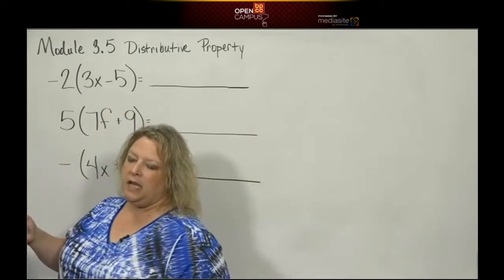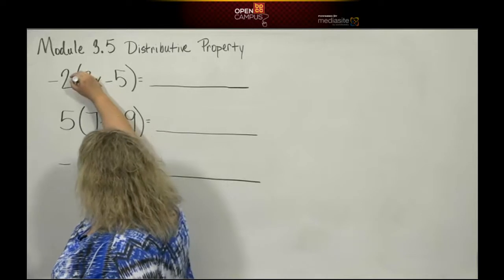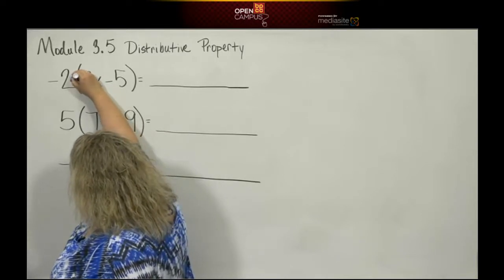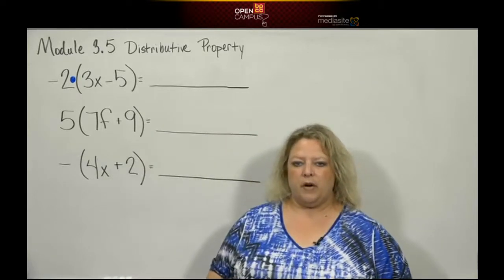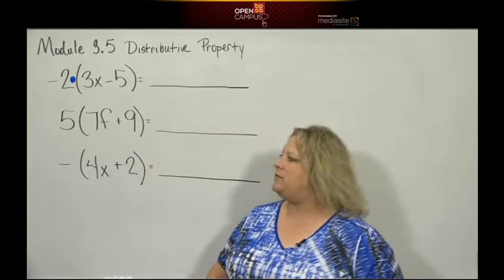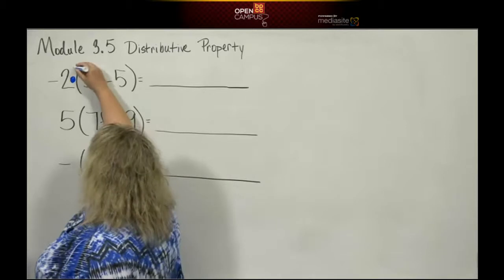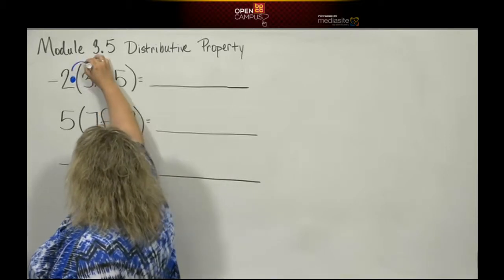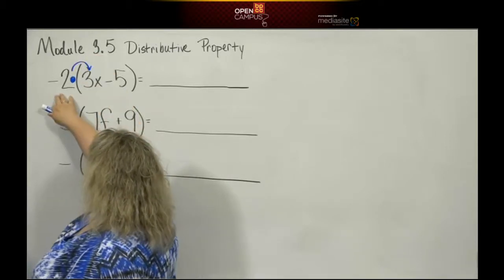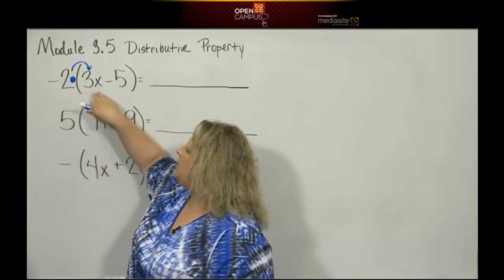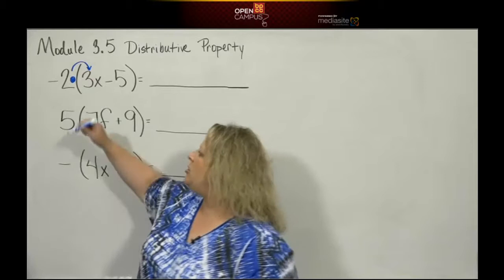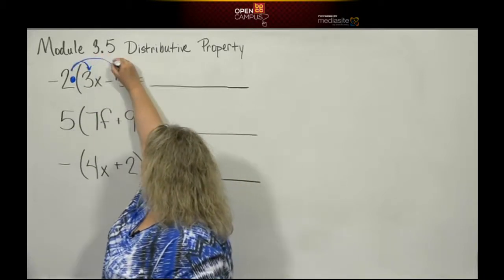In the beginning, if you want to, you can put a multiplication symbol, a dot right here, just so that reminds you that the operation is multiplication. We have to remember to multiply and get rid of that first. We're going to take negative 2, whatever's on the outside right next to our parentheses, and multiply it to each item, each term that's inside the parentheses.